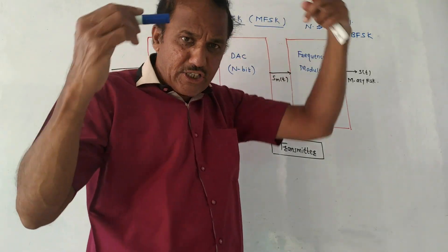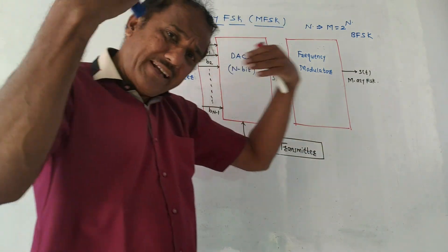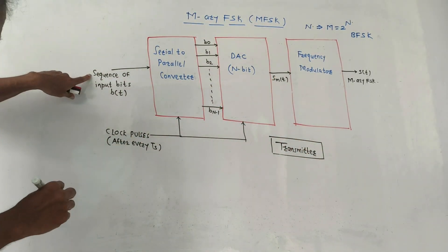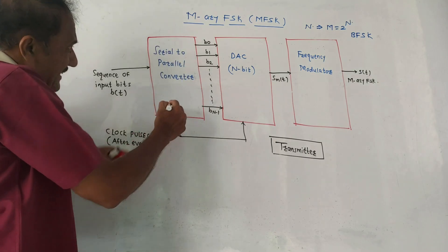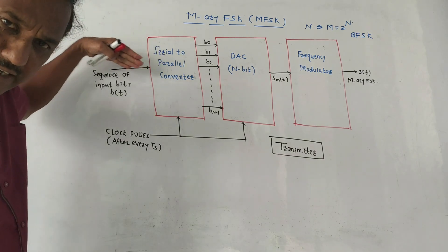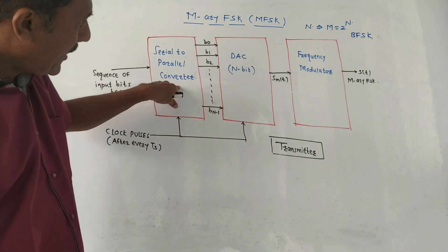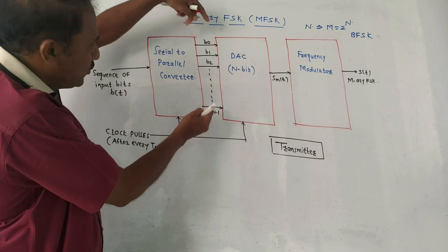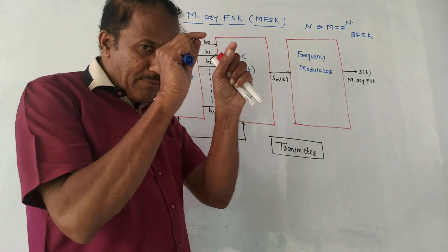Just to explain its way: n bits are used and M symbols are generated. Each symbol has a different frequency, so it is frequency shift keying. Just like in the binary case we discussed, two symbols use two bits and each bit has a different frequency. Here, a sequence of input bits is denoted by B of t. The first block is serial to parallel conversion. As the name indicates, this block converts the incoming data bits, which are in serial form, into parallel form. The output will be B0, B1, B2, up to Bn. These are the parallel form bits.